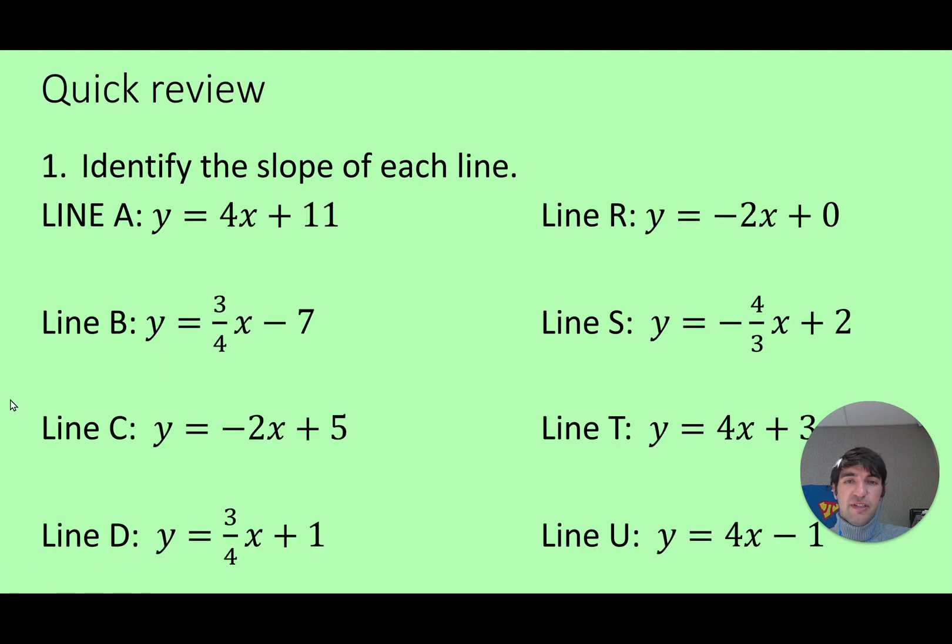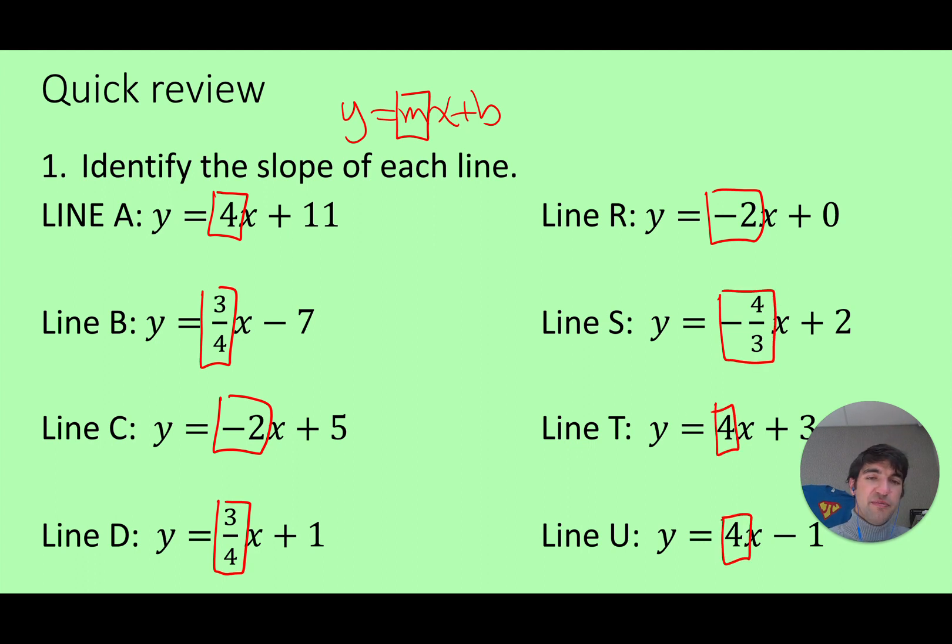All right, first up we've got a whole bunch of lines here and we're trying to find the slope. These all look to be in our nice format y equals mx plus b. It's called slope-intercept form. This number m represents slope. So on line A the slope is 4. Line B the slope is 3 over 4. Line C the slope is just negative 2. For each of these lines I can just find this number directly preceding x and that should be my slope.